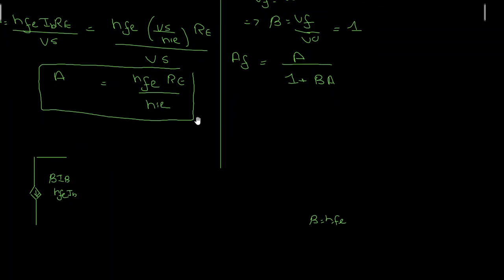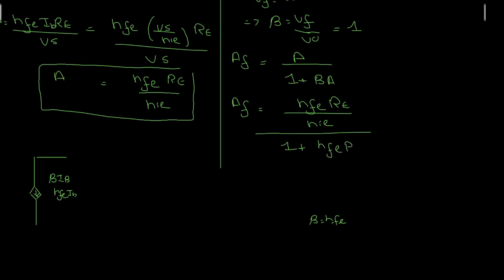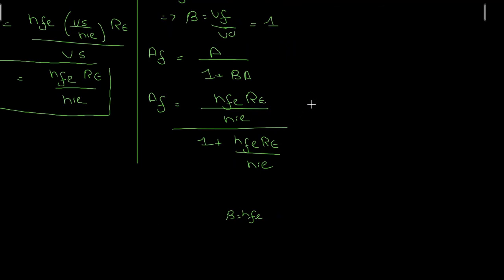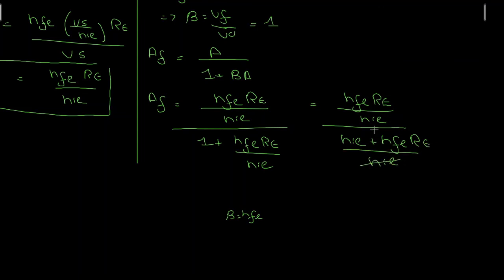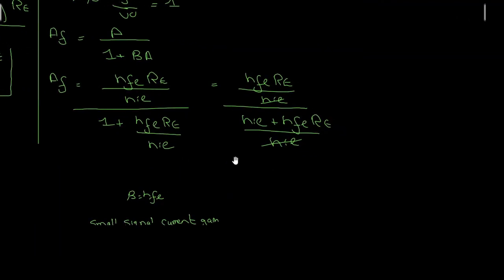Substituting A = HFE·Re/HIE and beta = 1: AF = (HFE·Re/HIE) divided by (1 + HFE·Re/HIE). The HIE terms combine and simplify, giving the gain with feedback as HFE·Re divided by (HIE + HFE·Re).